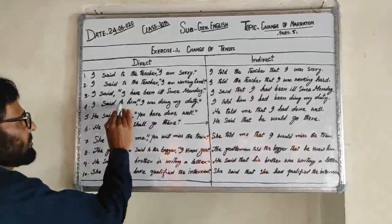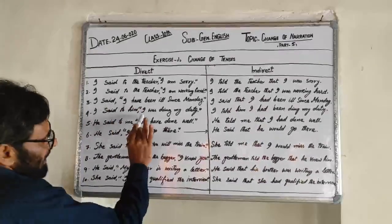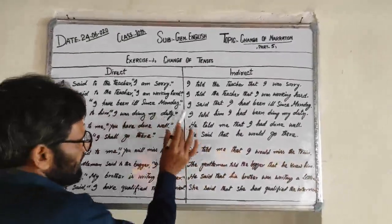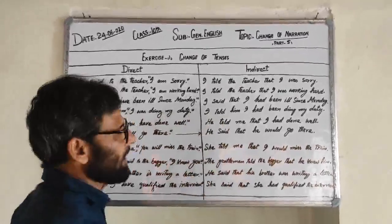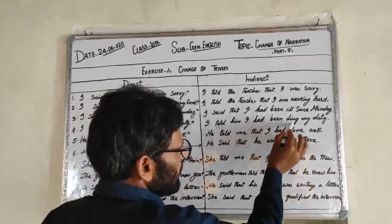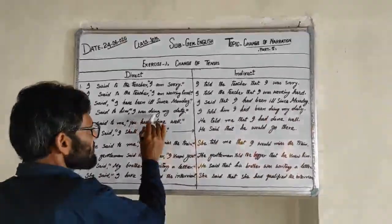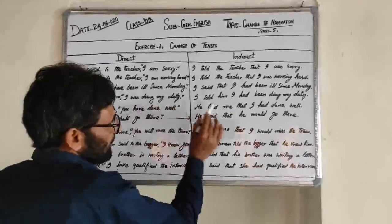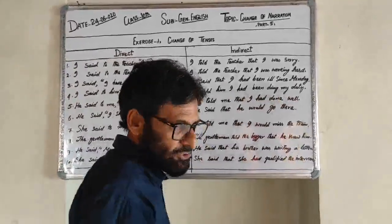Sentence 4: I said to him I was doing my duty → I told him I had been doing my duty. 'Was doing' changed to 'had been doing' in indirect speech.